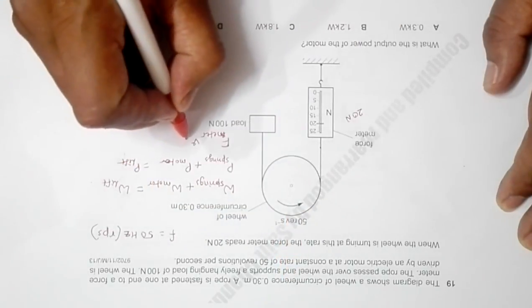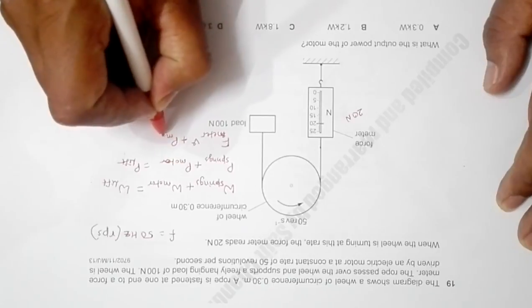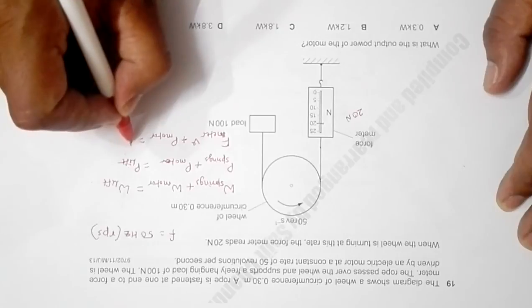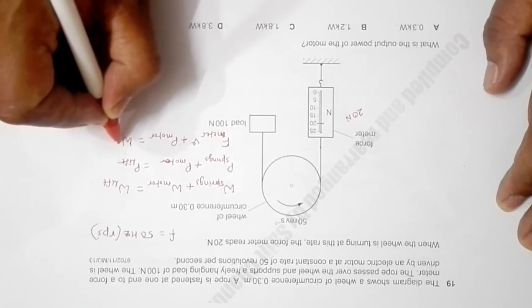Power of the motor plus this velocity is equal to the load that it lifts, which is the weight into its velocity.